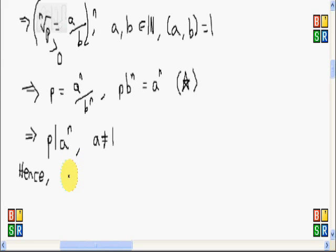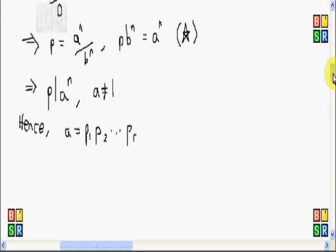Hence, we know from the fundamental theorem of arithmetic that if a is greater than or equal to 2 for any integer, then we will have that a can be written as a product of prime numbers. So we will just say that a is equal to p1 times p2 up to p sub r. R here is greater than or equal to 1.